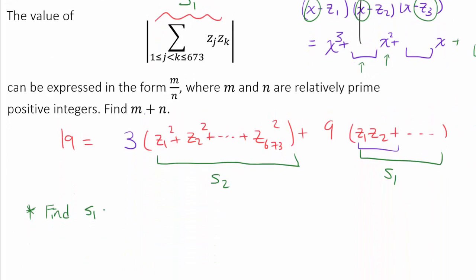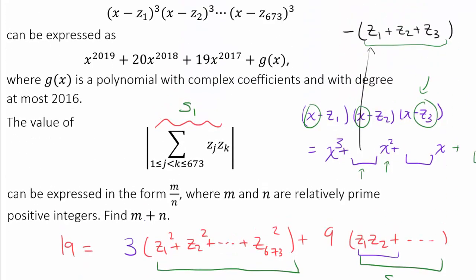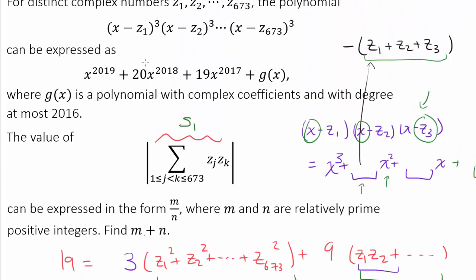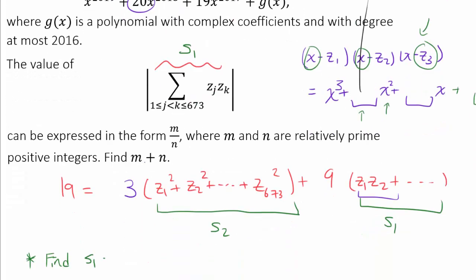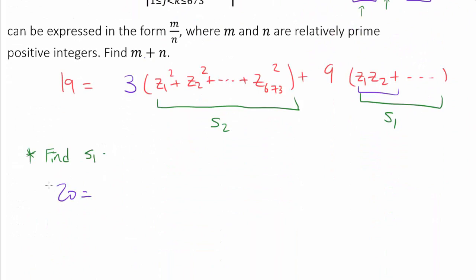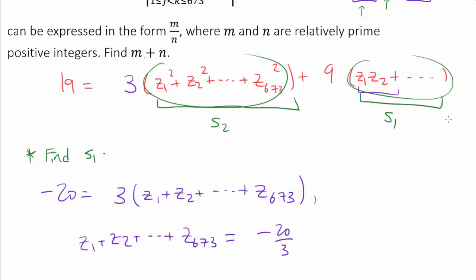Using the same reasoning, we know 20 is going to be the sum of every single root, taking multiplicity into account. So we're going to have z1 plus z1 plus z1 plus z2 plus z2 plus z2 and so on. So 20 is going to be, or negative of 20, I should say. So negative 20 is going to be 3 times z1 plus z2 plus all the way to z sub 673. Or that z1 plus z2 all the way to z673 is negative 20 over 3.